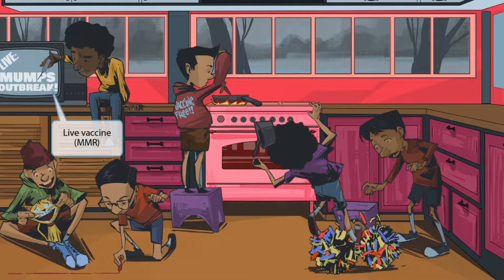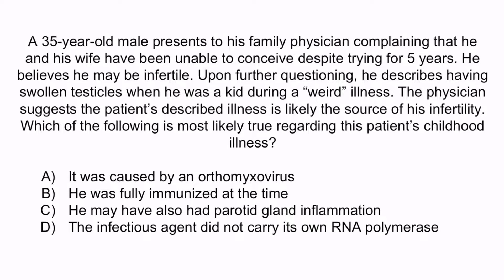Now that we've covered all the elements of the image, let's do a question to apply what you've learned. A 35-year-old male presents to his family physician complaining that he and his wife have been unable to conceive despite trying for five years. He believes he may be infertile. Upon further questioning, he describes having swollen testicles when he was a kid during a weird illness. The physician suggests the patient's described illness is likely the source of his infertility. Which of the following is most likely true regarding this patient's childhood illness? A: It was caused by an orthomyxovirus. B: He was fully immunized at the time. C: He may have also had parotid gland inflammation. Or D: The infectious agent did not carry its own RNA polymerase.